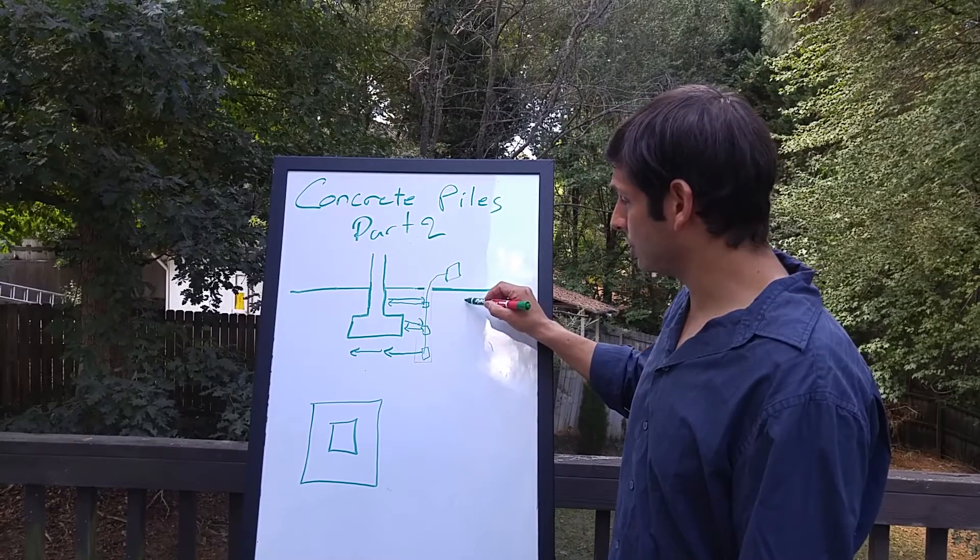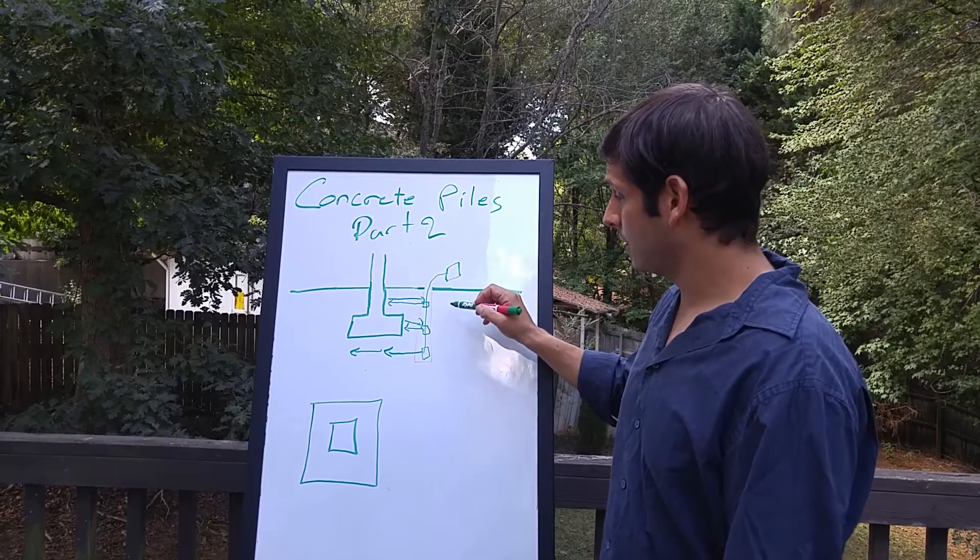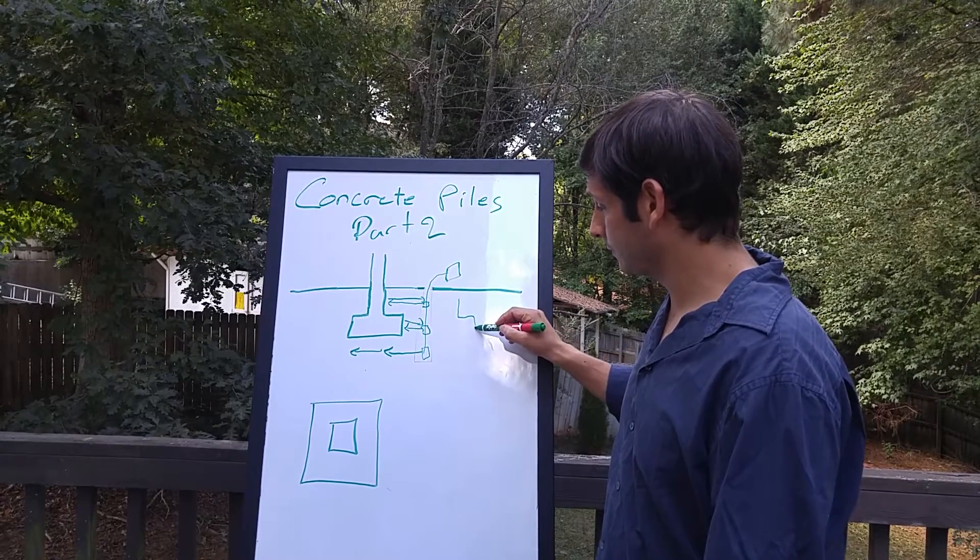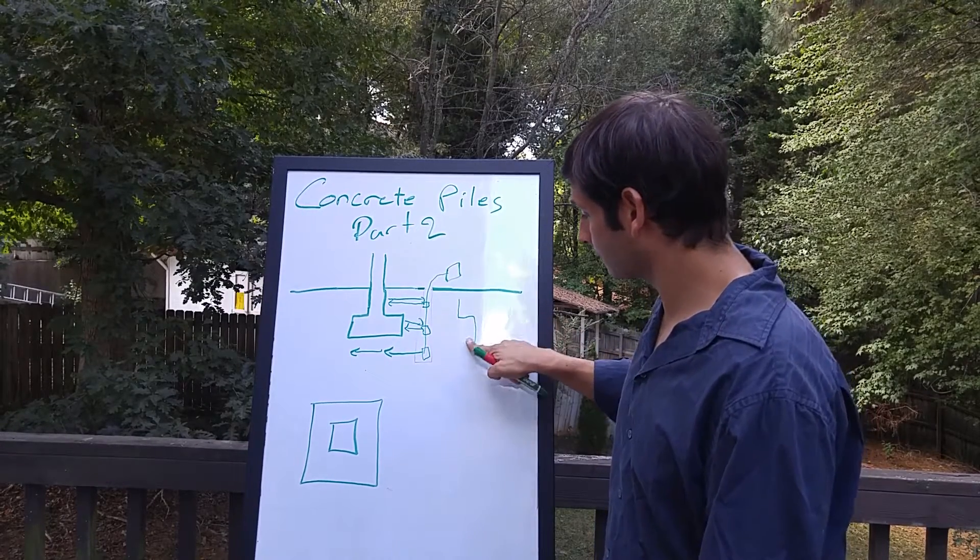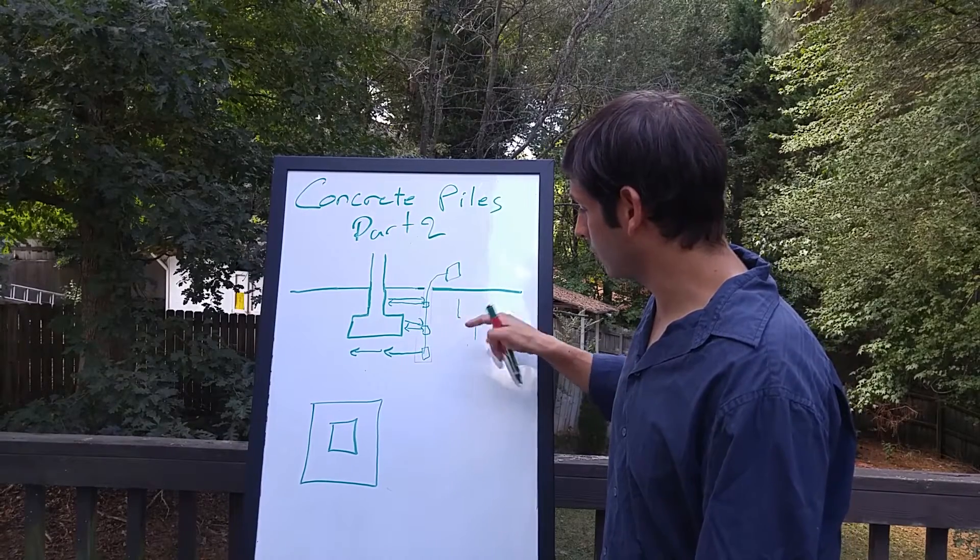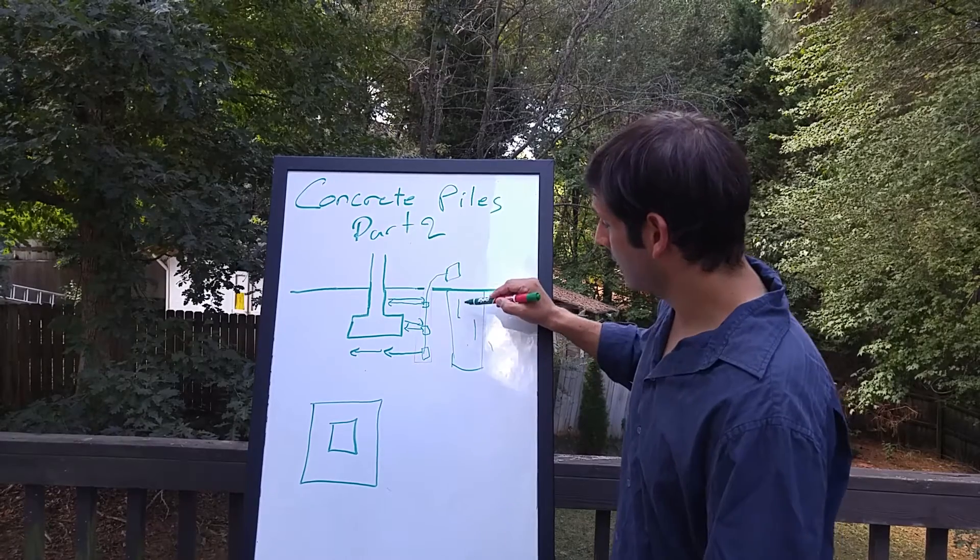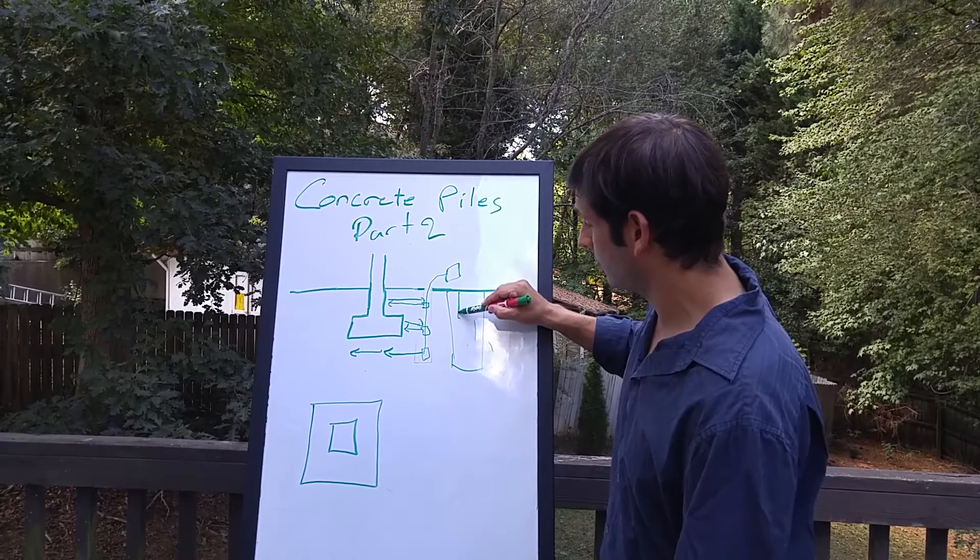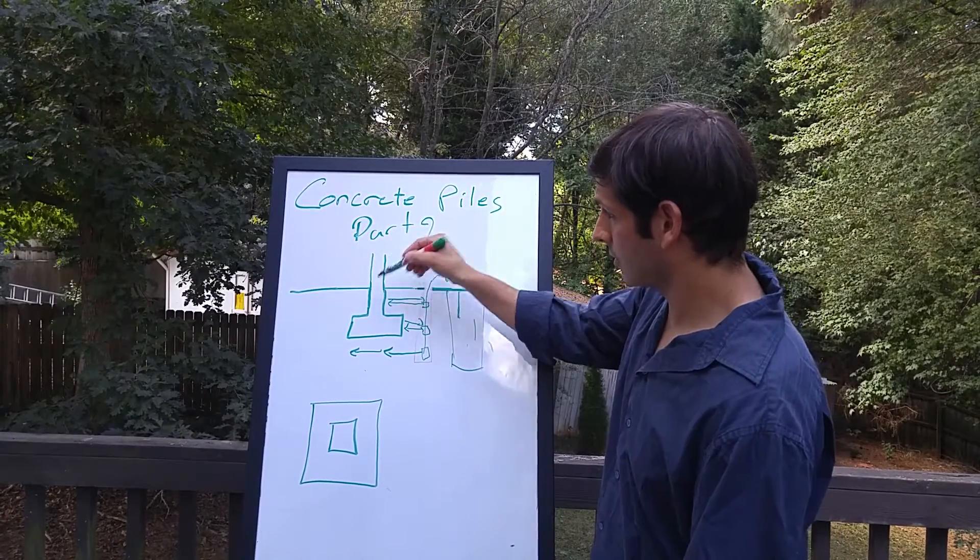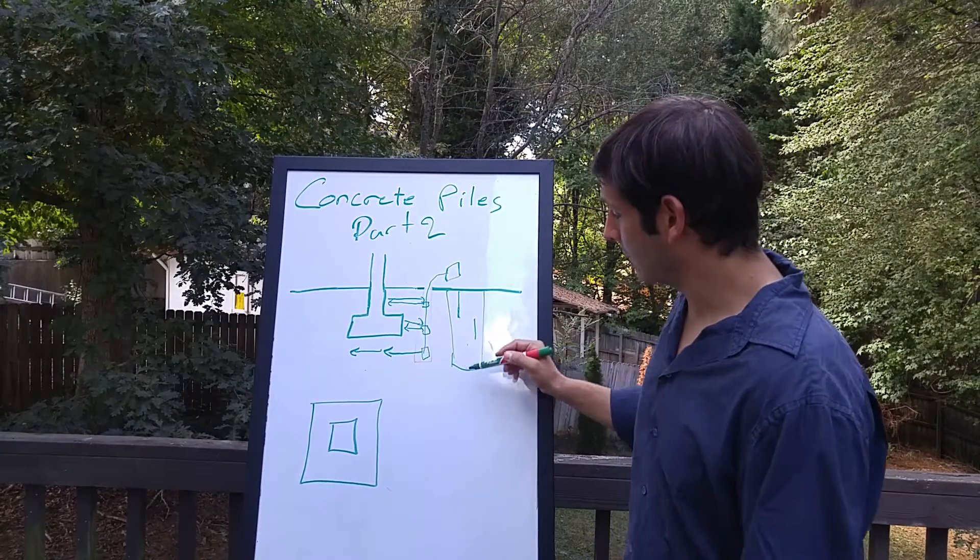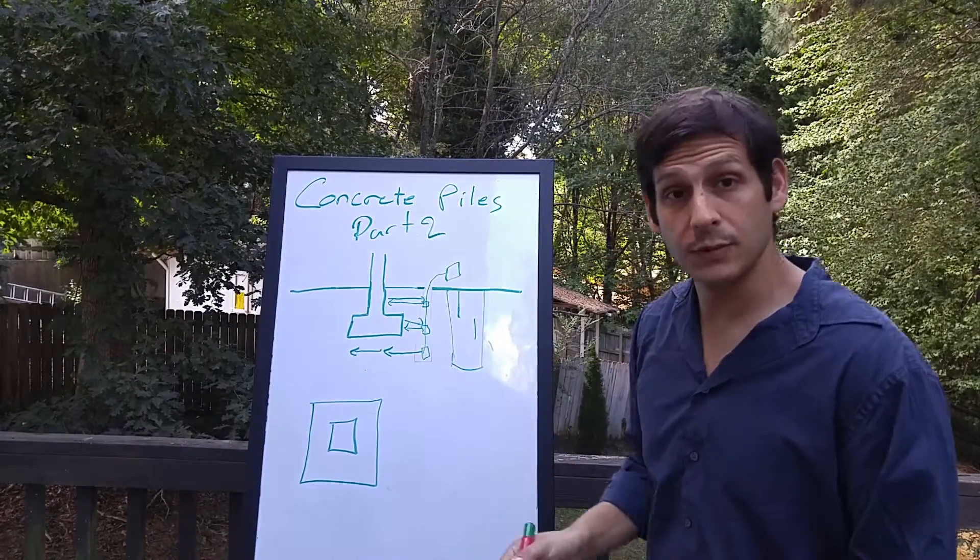And it will produce, basically, a profile showing the edge of this. So what it will show, you'll have a, this is your profile into the ground, your GPR data. It'll show the reflections from the concrete pile. And then it'll show reflection from the footing. And then it'll show no reflections once you're deeper than that.